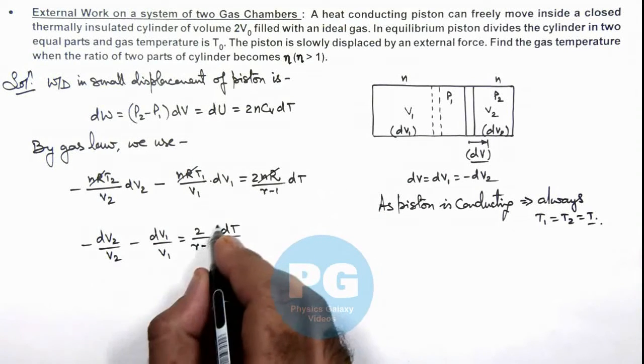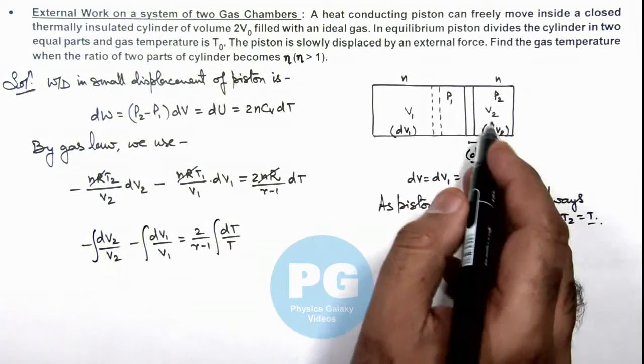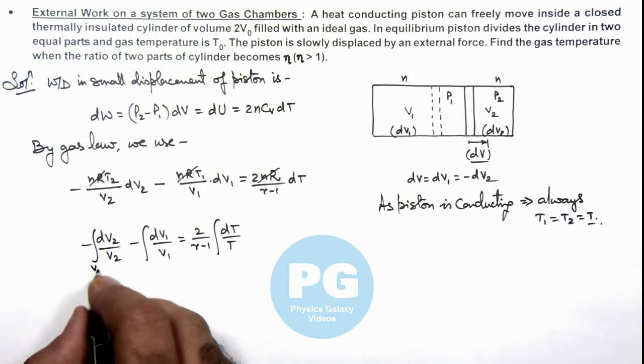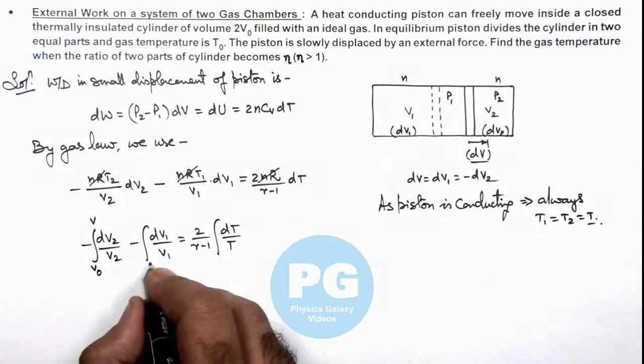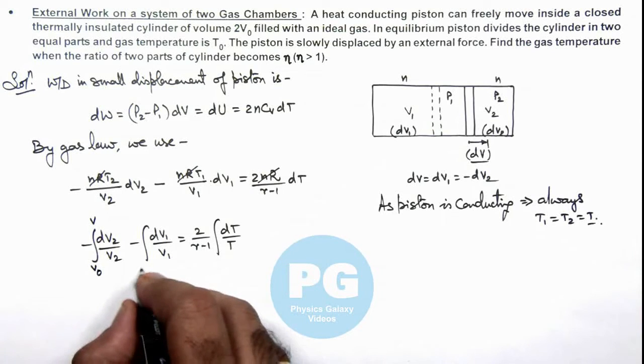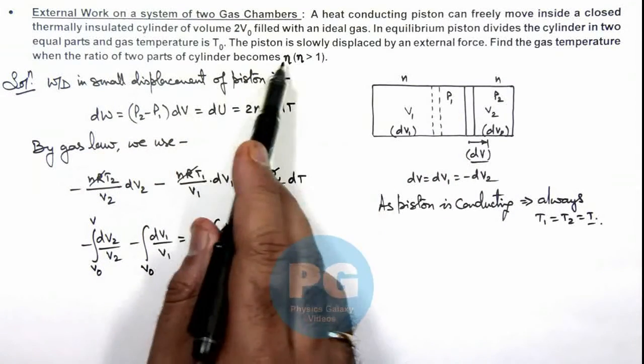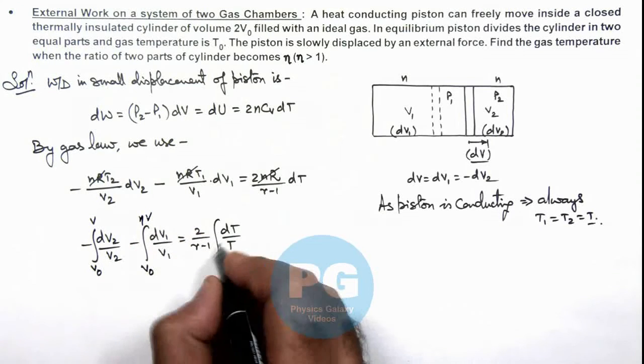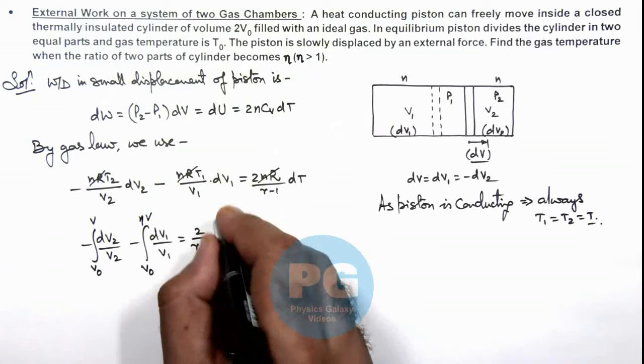After this point if we integrate this term, for volume V₂ we can integrate from V₀ to V, and for V₁ we can integrate it from V₀ to, as we are given that gas temperature when the ratio of two parts becomes η, so it will be ηV. And temperature is changing from T₀ to T.